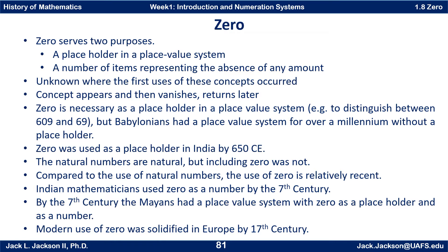Zero is absolutely necessary as a placeholder in a place value system. For example, to distinguish between the number 609 and the number 69. The six in 609 represents six groups of 100, but without the zero there as a placeholder — as in 69 — it would represent six groups of 10. So we need that zero there as a placeholder, and that's really an absolute necessity.